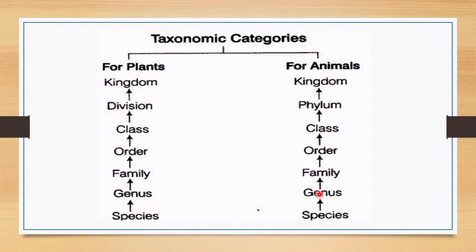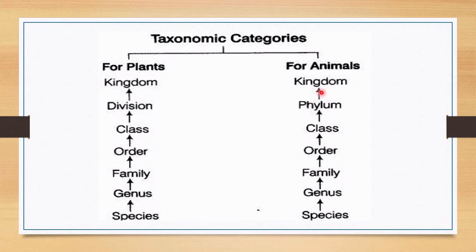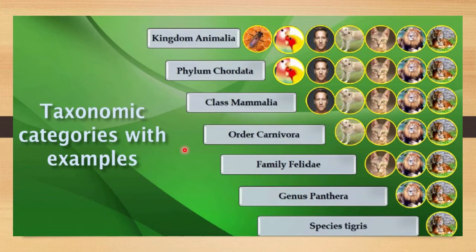Taxonomic categories are similar for both plants and animals: species, genus, family, order, and class are the same. The only difference is that for plants the category is called division, while for animals the same level is called phylum. Rest of the categories are similar in both cases. Be very clear: for plants use division; for animals use phylum.